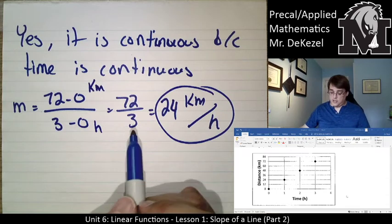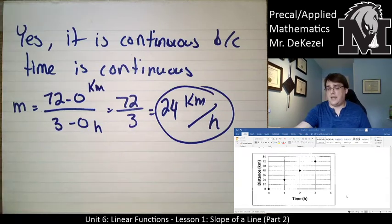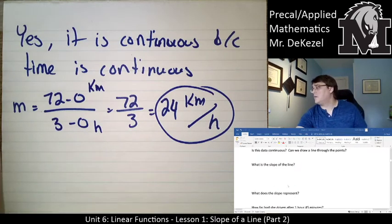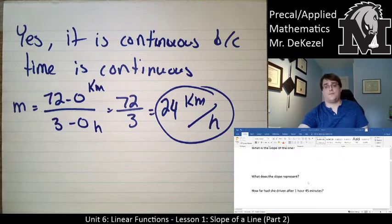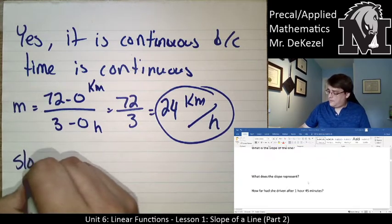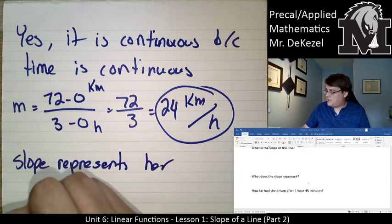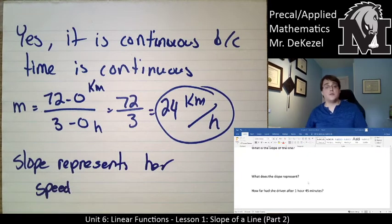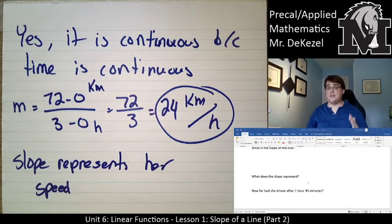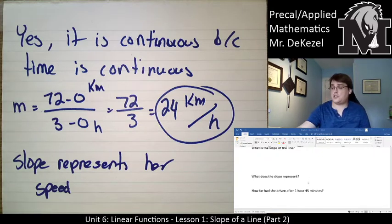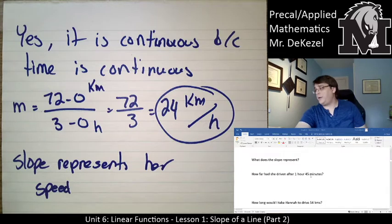That is the slope of the line. So the next question, what does that slope represent? That slope represents her speed. If she was going faster, it would be a steeper line. It would be pointed up more. If she's going slower, it's going to be a flatter line. It's not going to be as steep. It's something we call shallow.